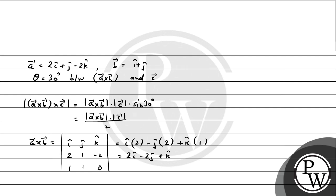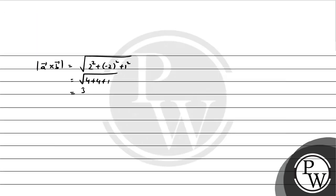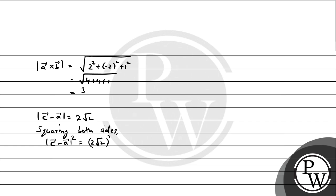Now we need the magnitude of vector c. We are given that the magnitude of (c minus a) equals 2 root 2. Squaring both sides: magnitude of c minus a squared equals 8. This expands to magnitude of c squared plus magnitude of a squared minus 2 times a dot c equals 8.